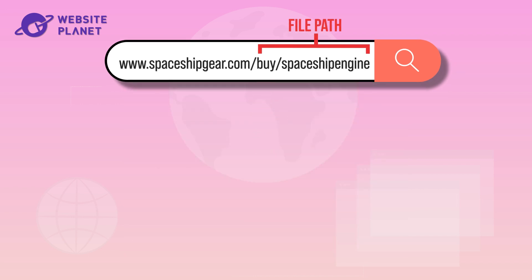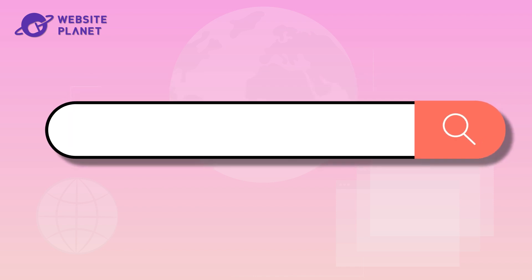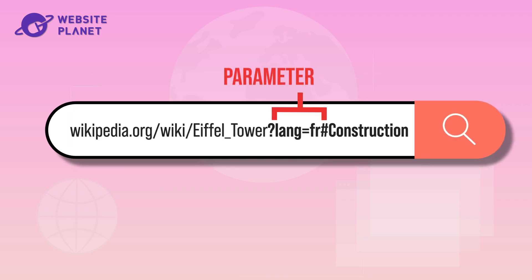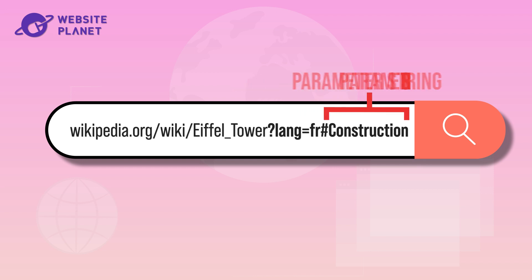And here's where things get spicy. Some URLs invite along a parameter string or an anchor. A parameter string, kicking off with a question mark, whispers to the server about the web page to load, while an anchor, starting with a hashtag, directs you to a precise spot on a long page.